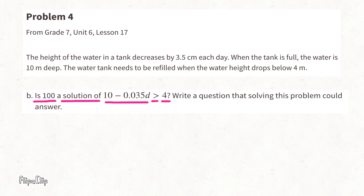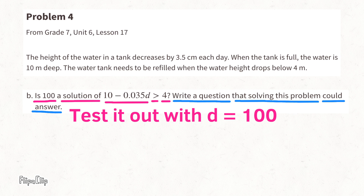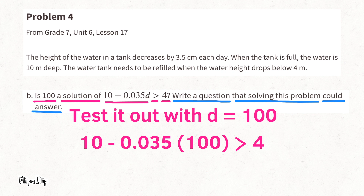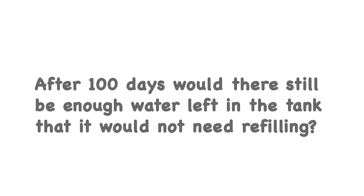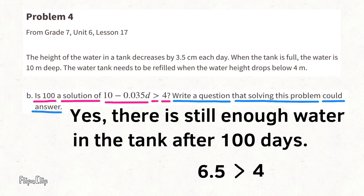Part B: Is 100 a solution of 10 − 0.035d > 4? Testing d = 100: 10 − 0.035 × 100 = 10 − 3.5 = 6.5, and 6.5 > 4 is true. So yes, 100 is a solution. A question answered by this inequality would be: after 100 days, would there still be enough water in the tank that it would not need refilling? Yes, the tank would not need refilling yet.